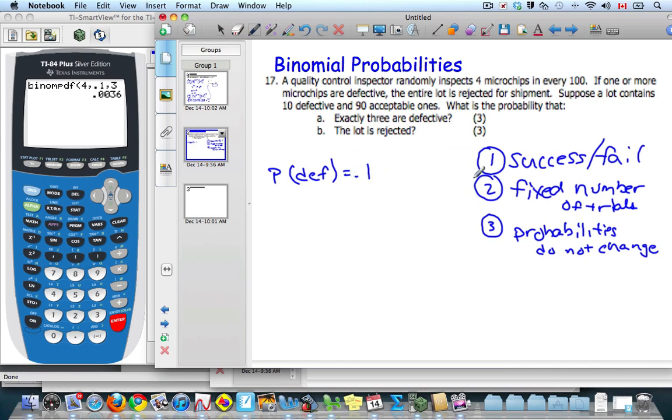This is a binomial scenario because these three conditions are met. I have a success or failure, which means it's either defective or not defective. There's a fixed number of trials, meaning I'm going to look at four microchips. I'm not going to keep on going until I find one defective. I'm going to look at only four.